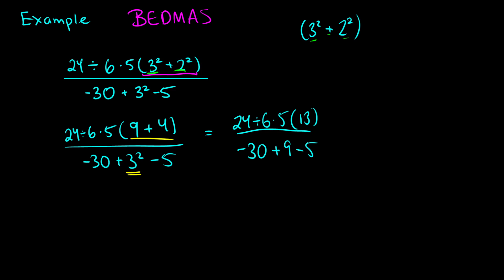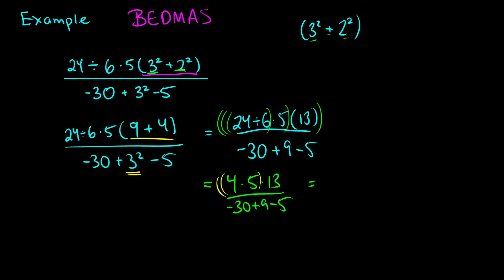Now on the top we have division and multiplication, so we tackle from left to right. First, 24 divided by 6 is 4. Then 4 times 5 is 20. Then 20 times 13 gives us 260. On the bottom we have negative 30 plus 9 minus 5, which is all addition and subtraction.